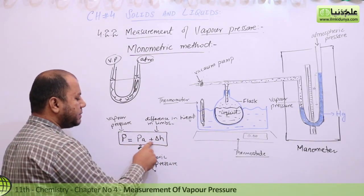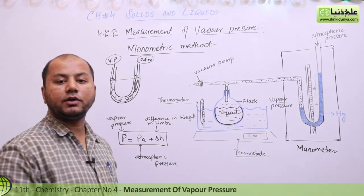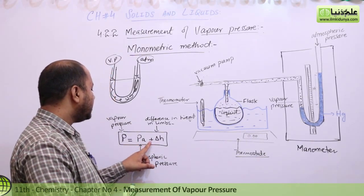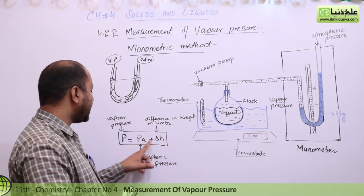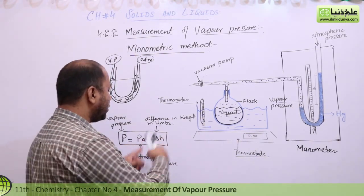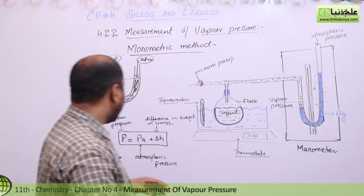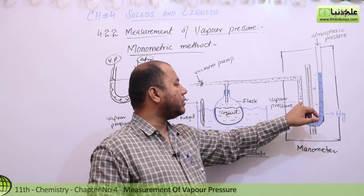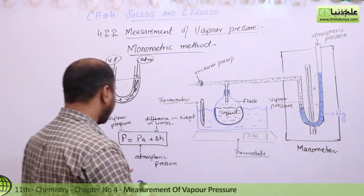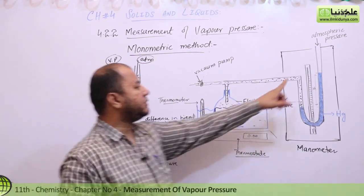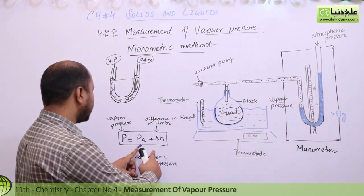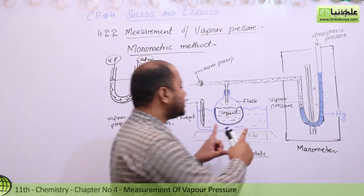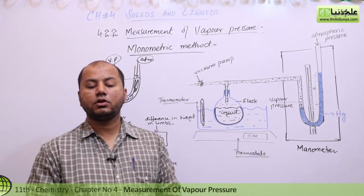Students, you measure the pressure like this: pressure equals atmospheric pressure plus the change in the height of the limbs (delta h). You place both values — atmospheric pressure and delta h — into this equation and add them. That way you can conclude the vapor pressure. That is known as the manometric method to determine the vapor pressure of any kind of liquid.